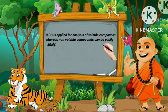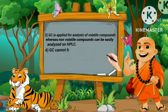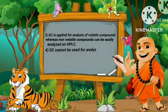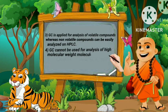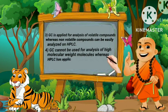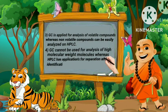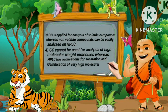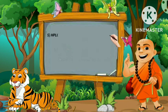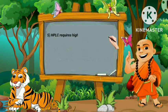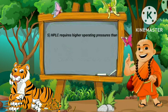Fourth, GC cannot be used for analysis of high molecular weight molecules, whereas HPLC has applications for the separation and identification of very high molecular weight compounds. Fifth, HPLC requires higher operating pressures than GC.